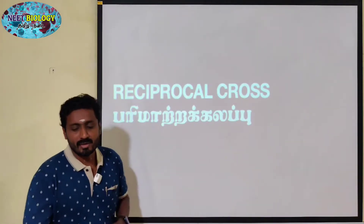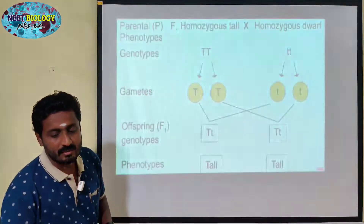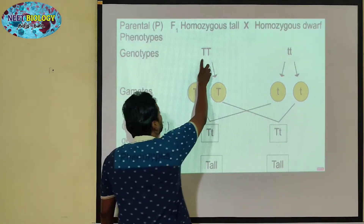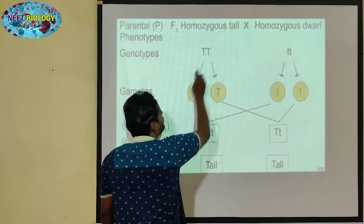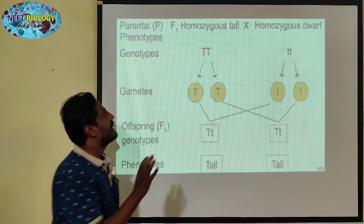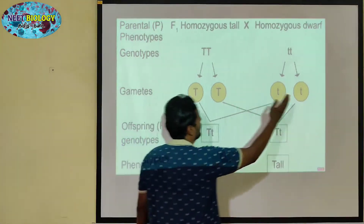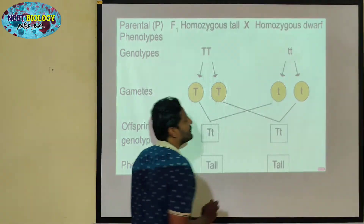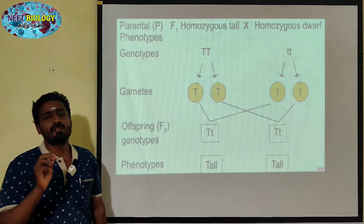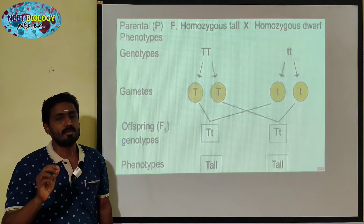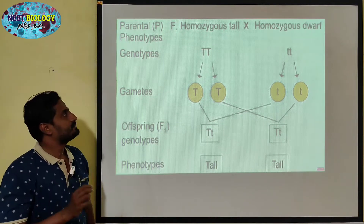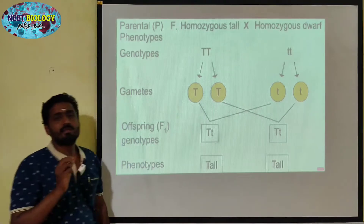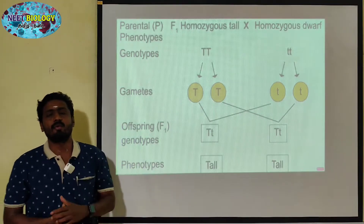A plant is tall. At the top of a crop, there is a tall plant with genotype TT, and there is a dwarf plant with genotype tt. There are pollen grains involved in the cross.